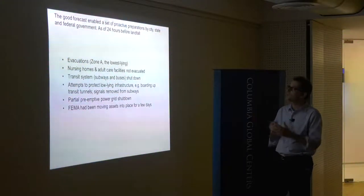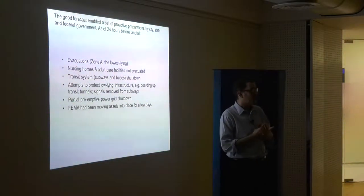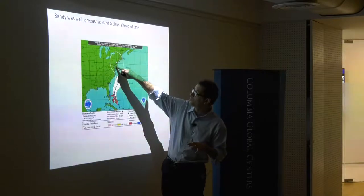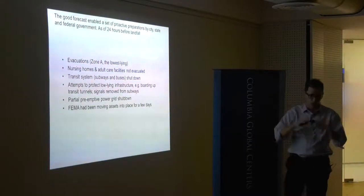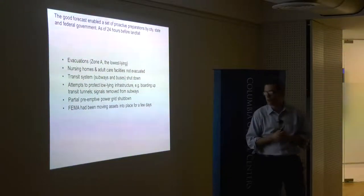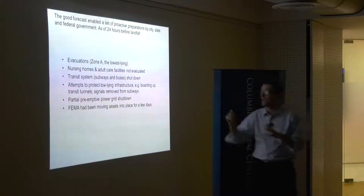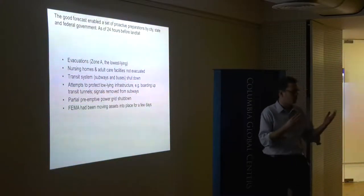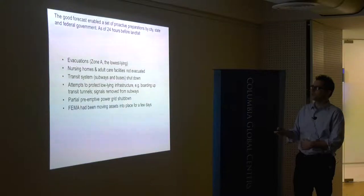As a consequence of the good forecast, state, local, and federal governments had a chance to prepare. About a day before Sandy hit, mandatory evacuations were ordered for Zone A — the lowest-lying neighborhoods — covering about 370,000 people. One decision that in hindsight was bad: nursing homes and adult care facilities were not evacuated even if they were in Zone A, because moving them was considered difficult.